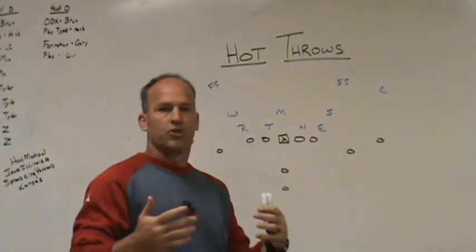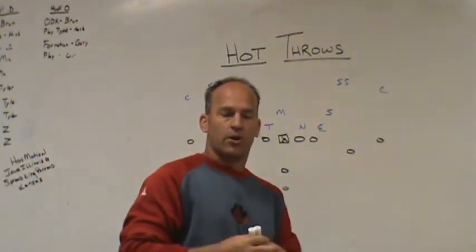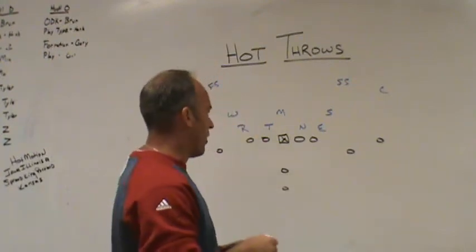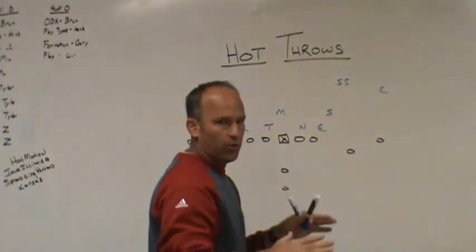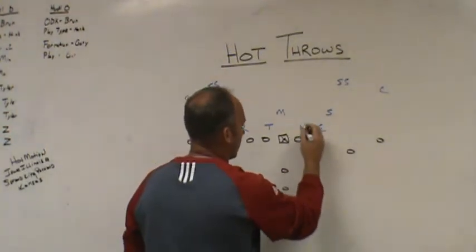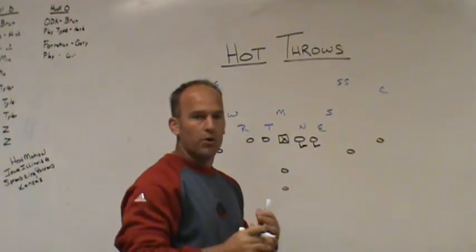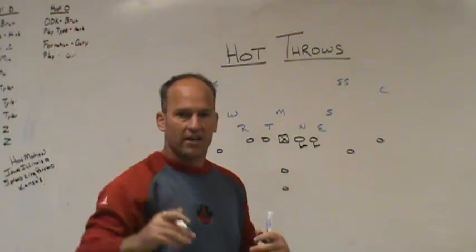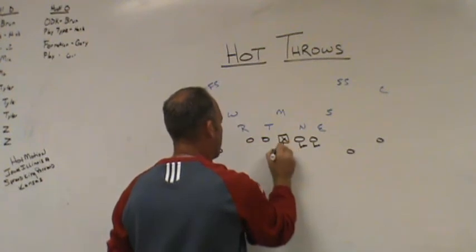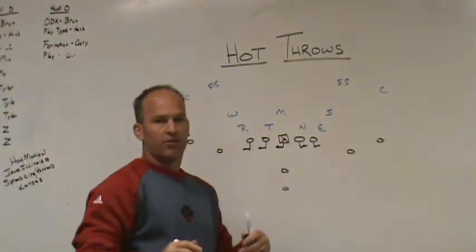The first concept is a simple curl spot flat — we call it 'curl spot' because we don't use the number two receiver on a slide, but it's an old-fashioned curl-flat check-down theory that everybody in America probably runs. On whichever side we throw the football, the offensive tackle has the number two on the line of scrimmage, the guard has the number one. Our center always turns away from the passing side concept, creating a three-man zone side with the guard and tackle.